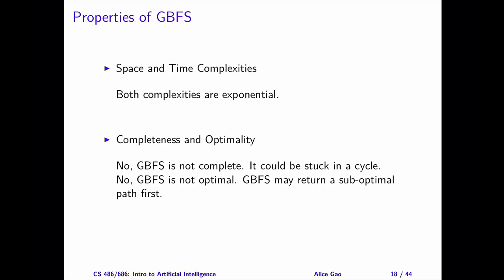There are many correct examples you can come up with. Let me give you some hints. For the not complete example, construct a graph with two paths. One path ends with a cycle, and the other one ends with a goal state. Then, design the heuristic function such that greedy BFS will go through the cycle forever.